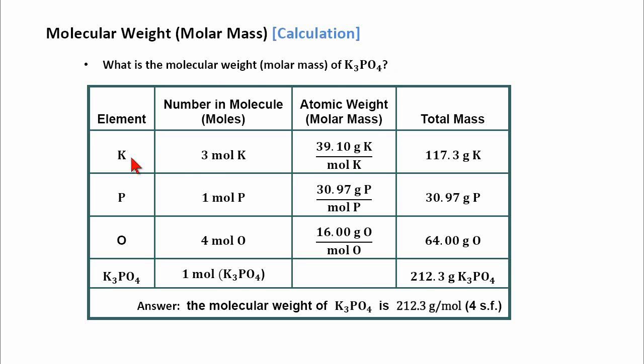So for the element potassium, there are three moles of potassium in one molecule of potassium phosphate. That's what that subscript means. It means there's one mole of phosphorus and four moles of oxygen. Hence, we can go down here, put one mole of phosphorus, four moles of oxygen, and this one mole of this compound.